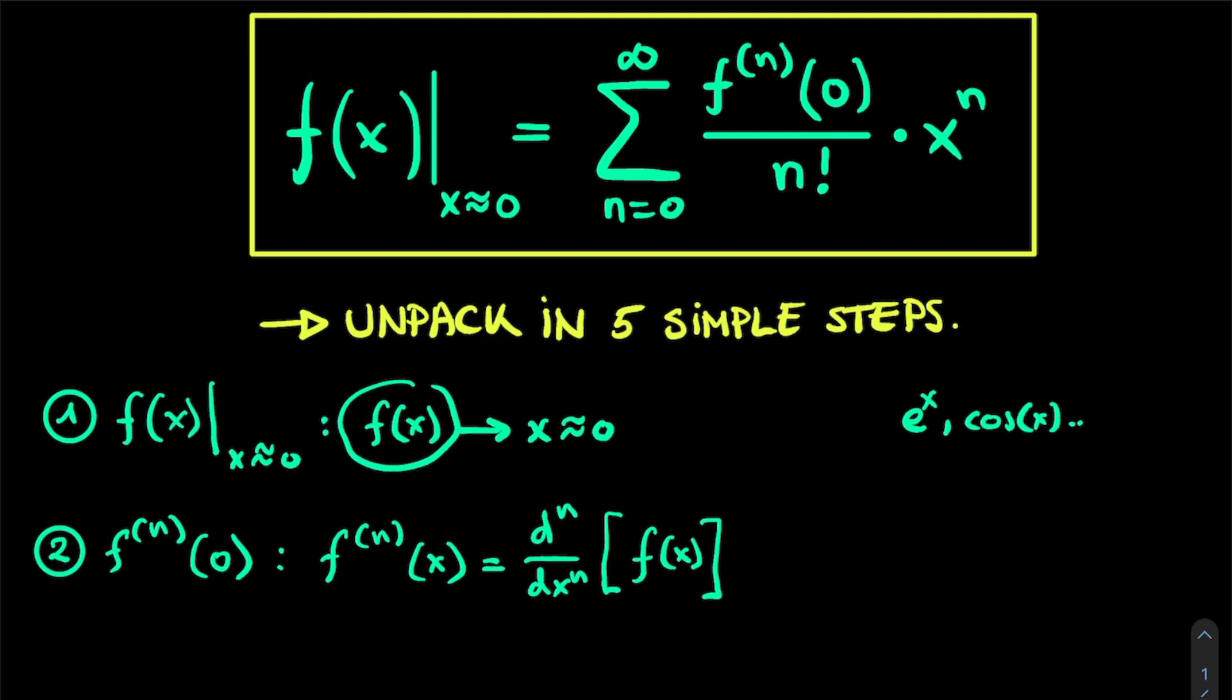And then once we've taken this derivative, we fill in x is equal to 0. So we can write this with our vertical line notation of x is exactly equal to 0. So basically to calculate this symbol, we first take the nth derivative and then we fill in x is equal to 0 in whatever we obtain.